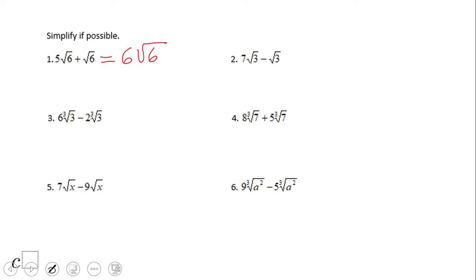What about number three? The same story. You have 6∛3 - 2∛3, that will be 4∛3.